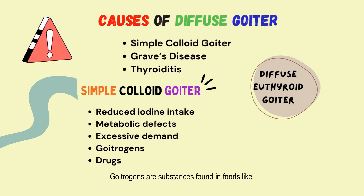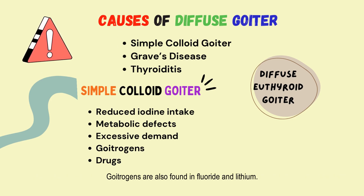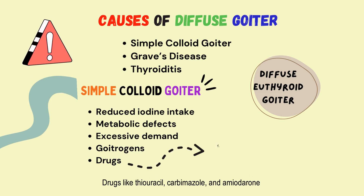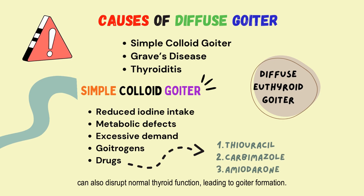Other causes of goiters include goitrogens and certain drugs. Goitrogens are substances found in foods like cabbage, manioc, and other vegetables that can interfere with the thyroid's ability to produce hormones. Goitrogens are also found in fluoride and lithium. Drugs like thiouracil, carbimazole, and amiodarone can also disrupt normal thyroid function, leading to goiter formation.